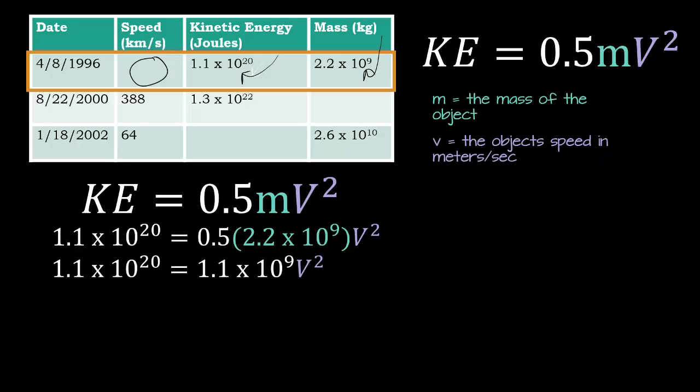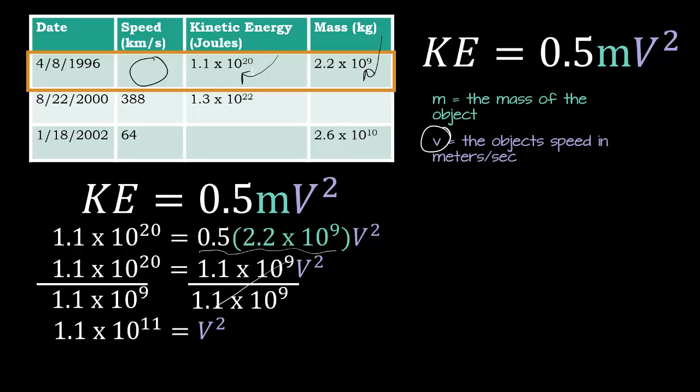My next step was to multiply 0.5 times 2.2 times 10 to the 9th, and this gives us 1.1 times 10 to the 9th. My next step is to get v squared by itself, so I need to divide by 1.1 times 10 to the 9th on both sides. Now, I don't want to know what v squared is, because my formula v is the object speed, not v squared. So to get rid of it, I need to take the square root of both sides. When I do that, I get 3.16 times 10 to the 5th.